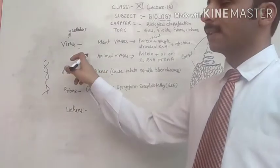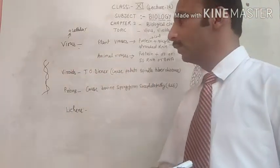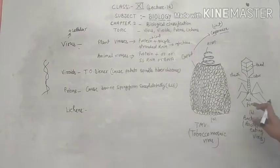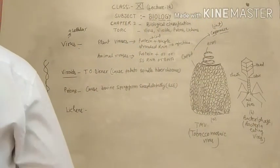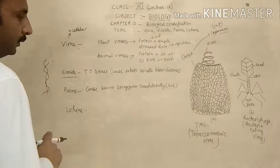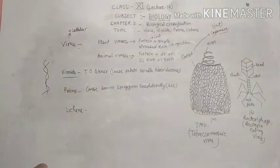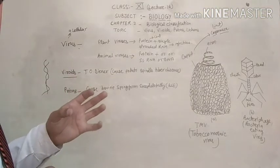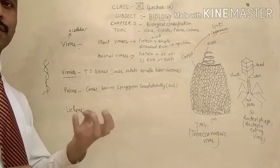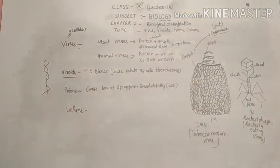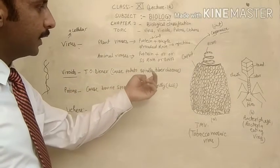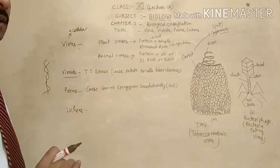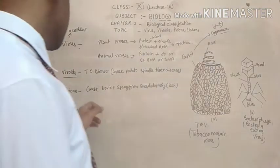I hope this is clear to you. Viruses are the connecting link between the living and non-living. There are many more examples of viruses. The next topic is viroids. Ivanovsky observed that a few smallest particles — smaller than viruses — cause diseases in different plants and animals, like potato spindle tuber disease, which is caused by viroids.